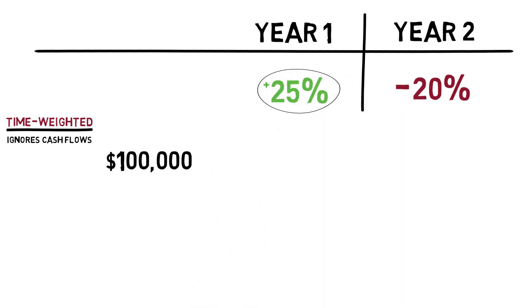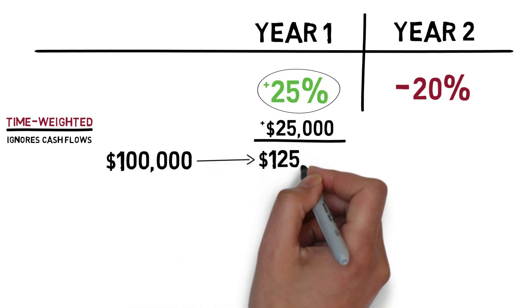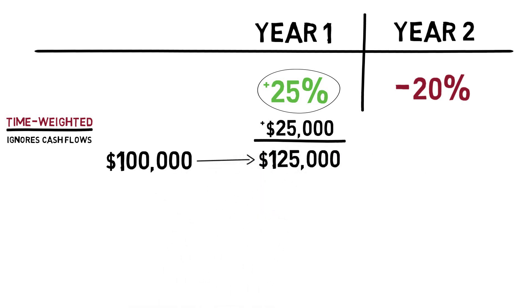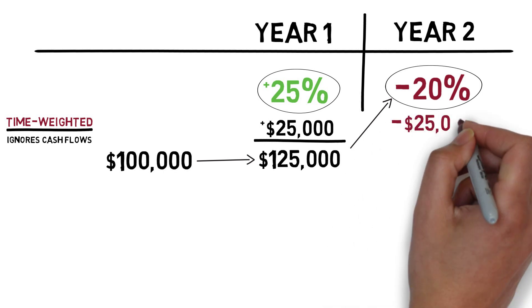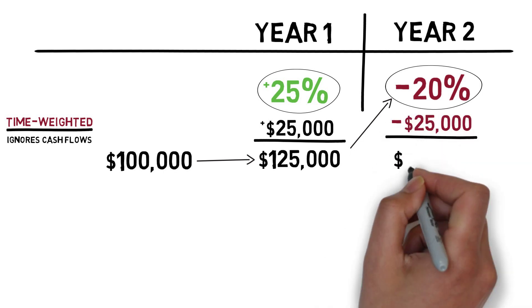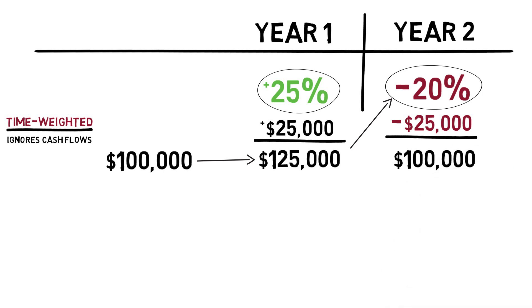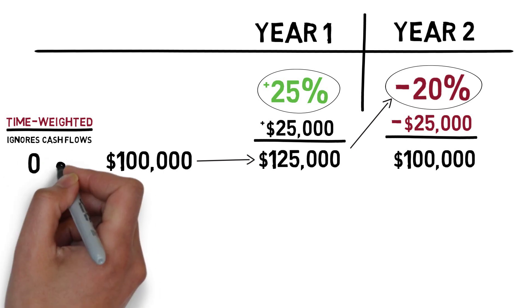it would gain 25% or $25,000 in year one. So now we start year two with $125,000. If we lost 20% in year two, then $125,000 times 20% is $25,000, which brings us right back to $100,000, or no overall gain over the two years. Therefore, the rate of return using a time-weighted calculation would simply be 0%.